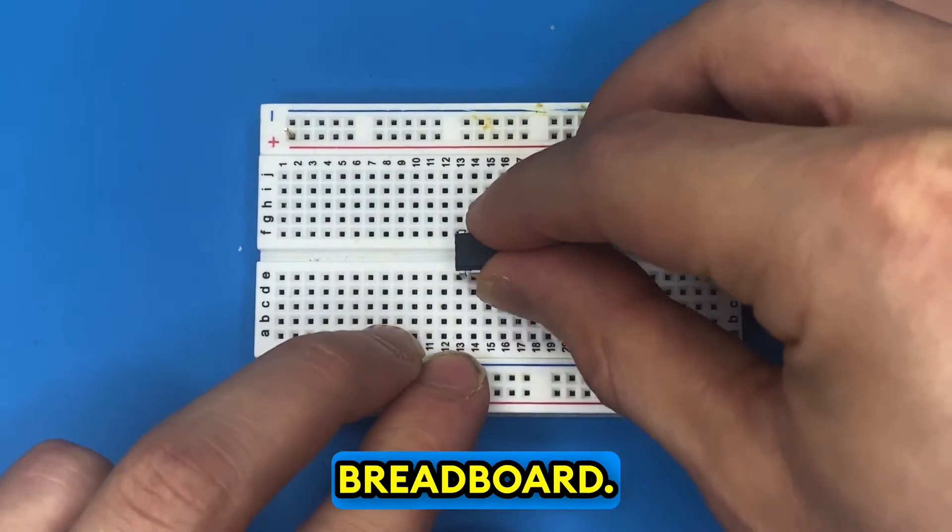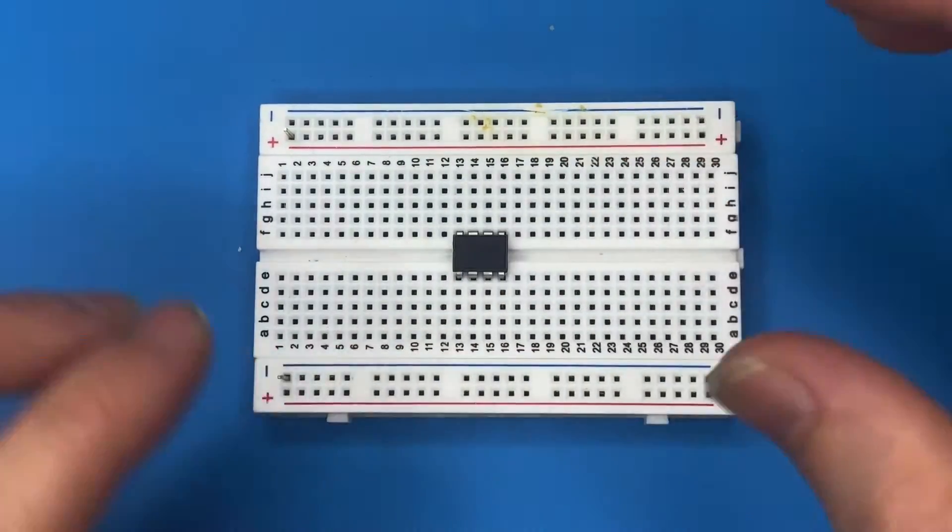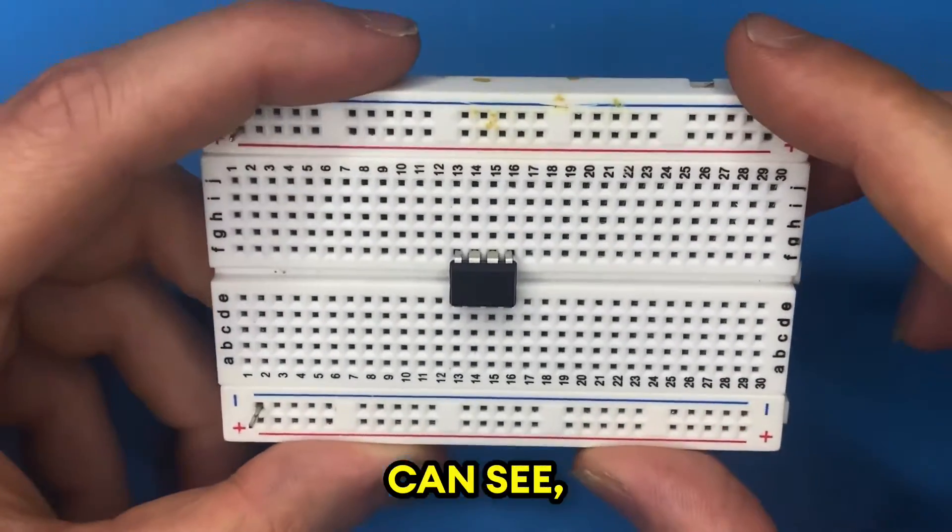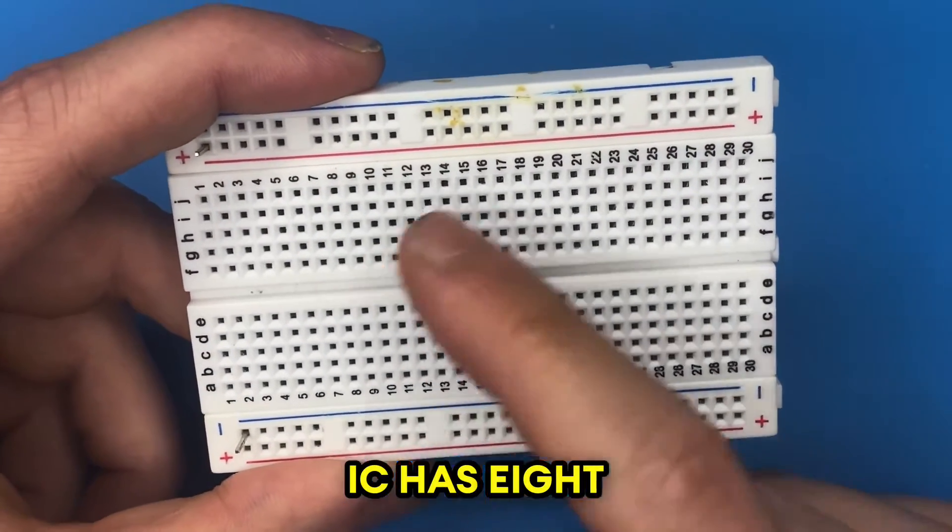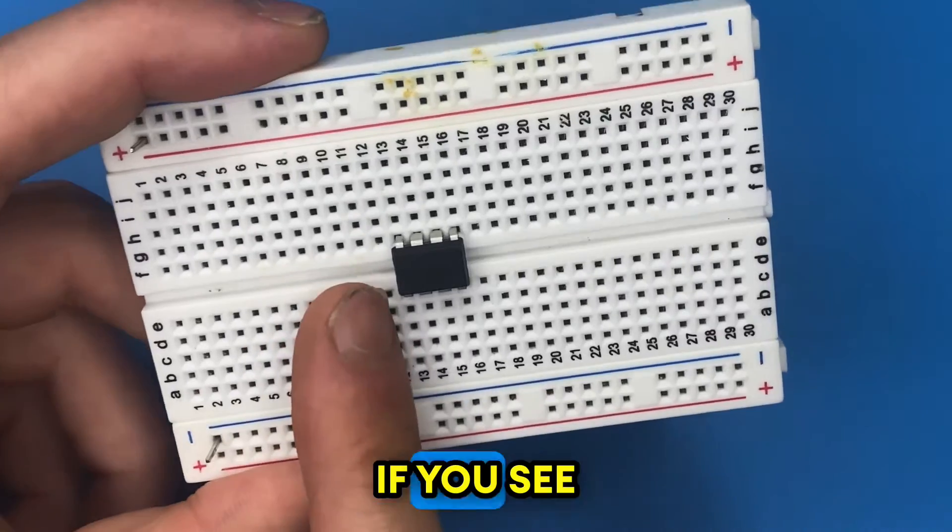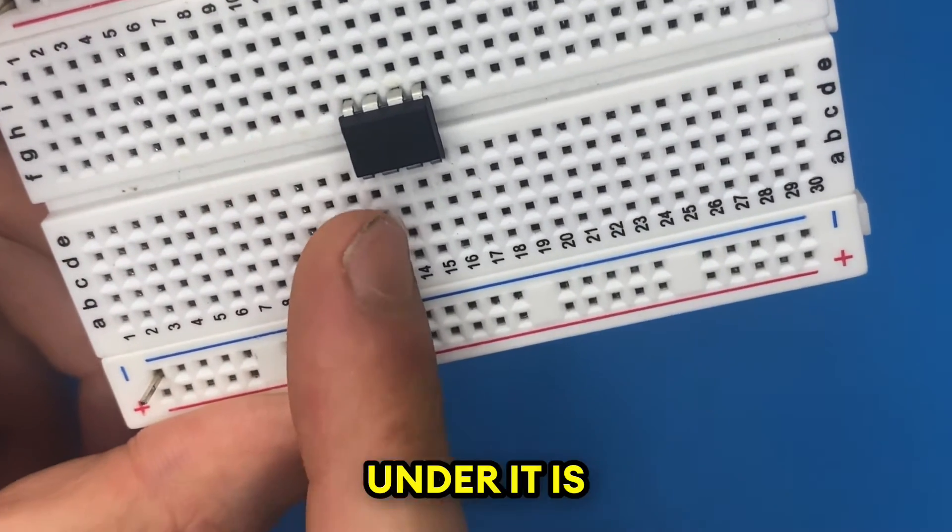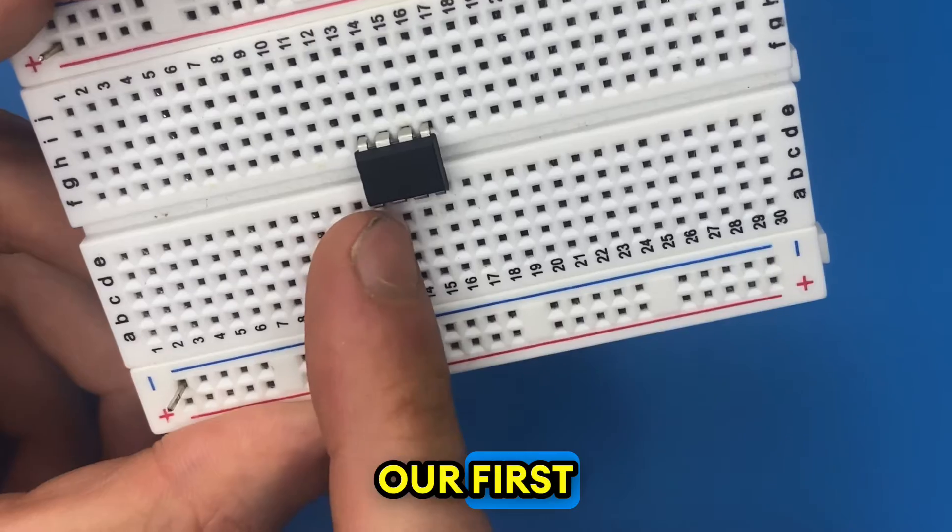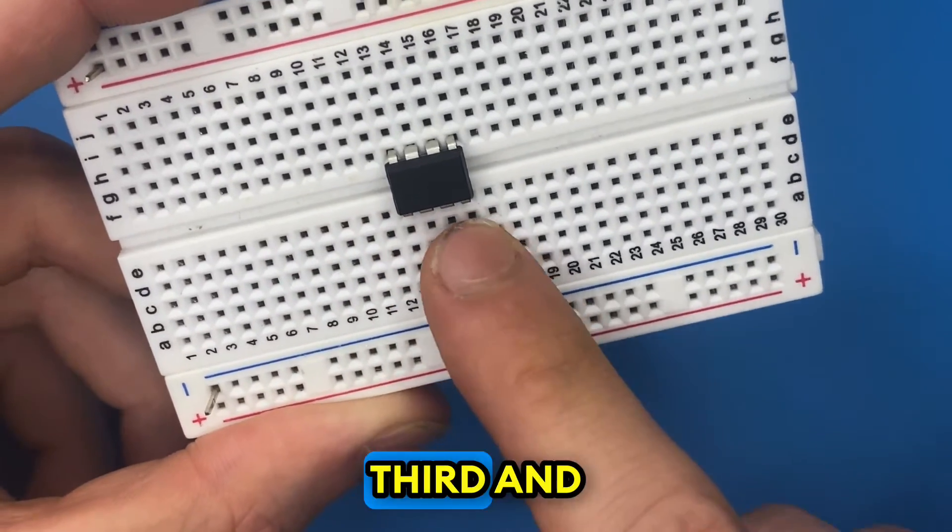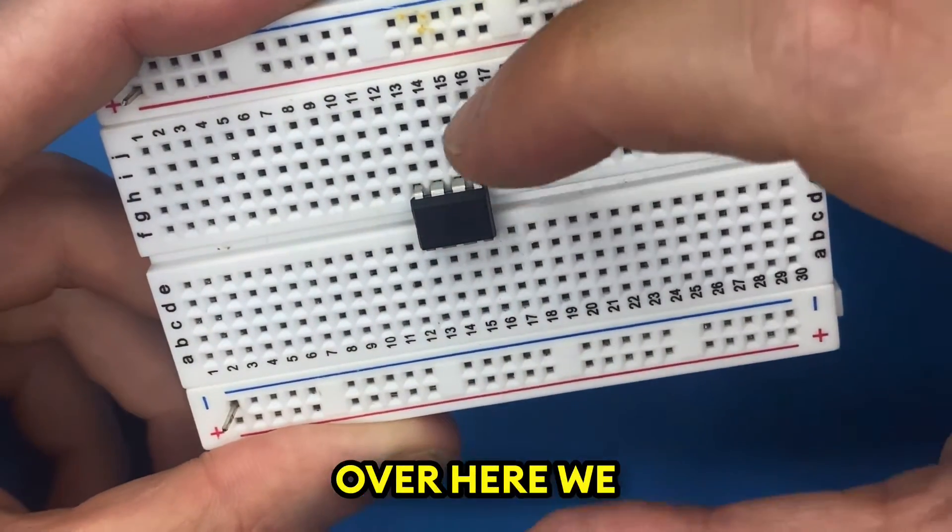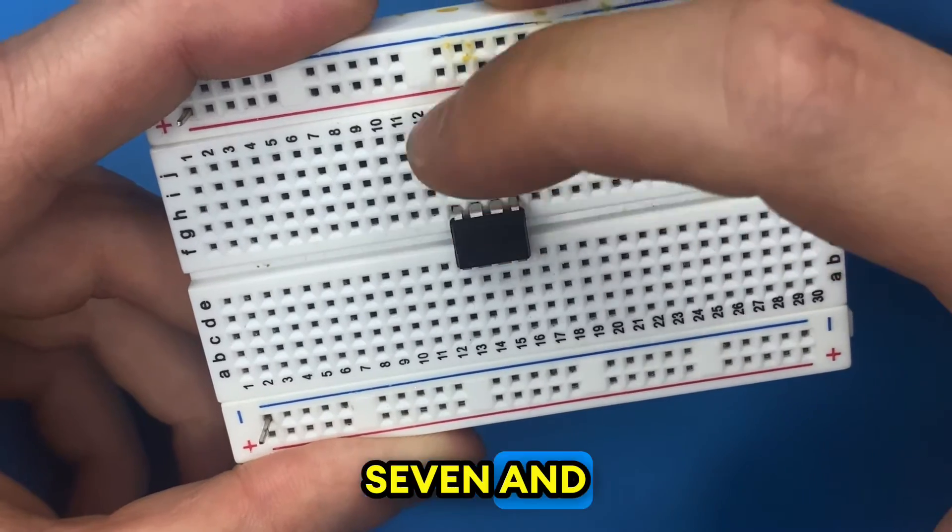As you can see, the 555 timer IC has eight pins. If you see this notch over here, the pin under it is going to represent our first pin, then second, third, and fourth pin. Up over here we have pin five, six, seven, and eight.